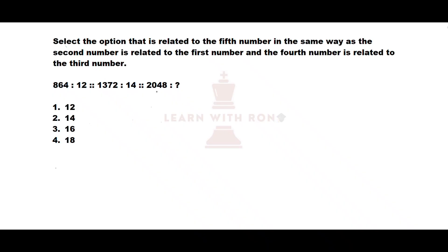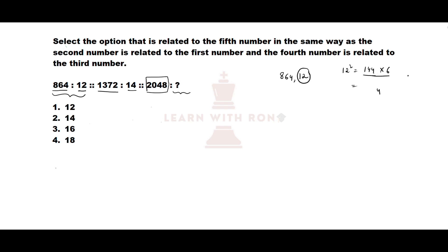Let's see what they have given in our first question. 12 is related to 864, 14 is related to 1372. We need to find a number which is related to 2048. Let us take the first two numbers 864 and 12. If I do the square of 12, we know that 12 square is 144, and if I multiply 144 with 6, I get 864. So I can write 144 as 12 square and 6 as 12 by 2.